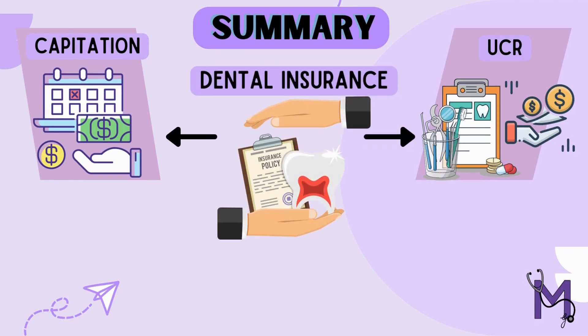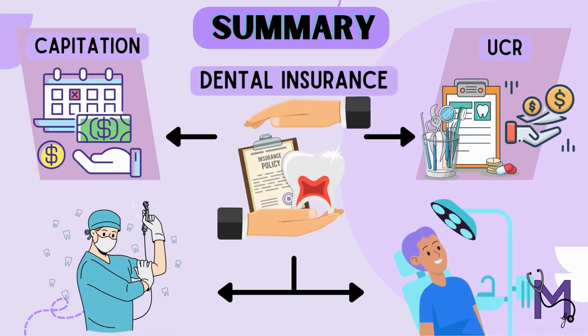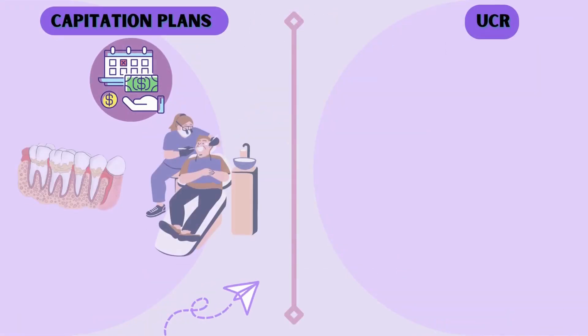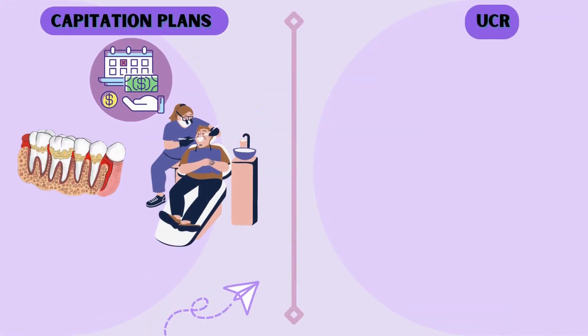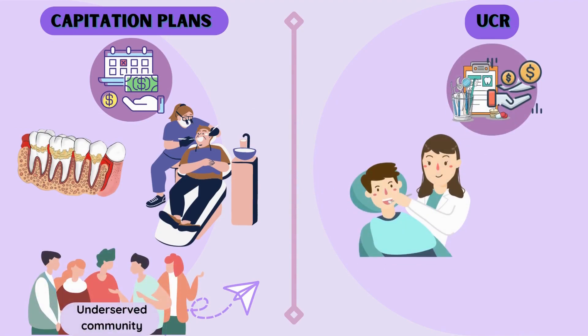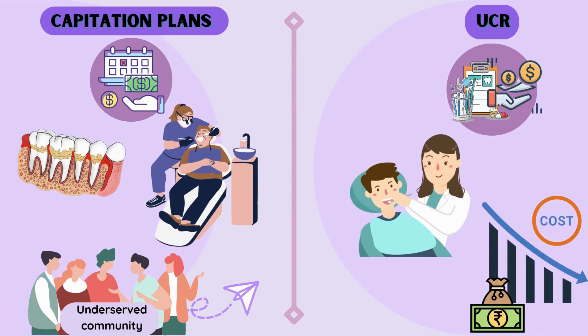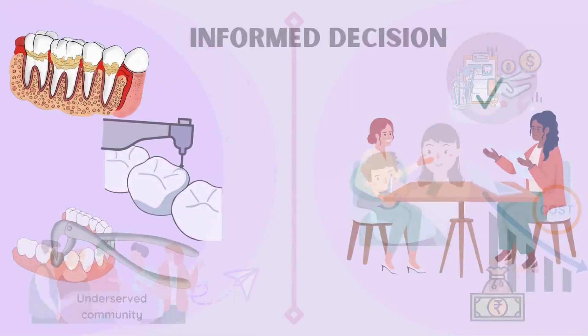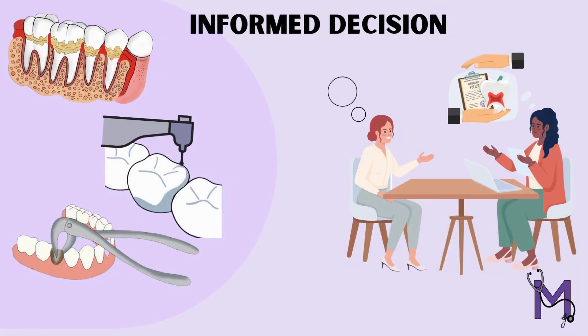In summary, capitation plans and UCR fees are important concepts in dental insurance that can have a significant impact on patients and providers. Capitation plans encourage preventive care and can provide dental services to underserved communities, while UCR fees help set reasonable limits on the cost of dental services. Understanding these concepts can help patients make informed decisions about their dental insurance coverage and treatment options.